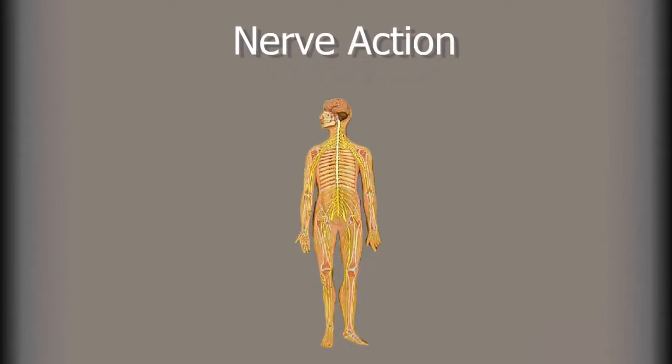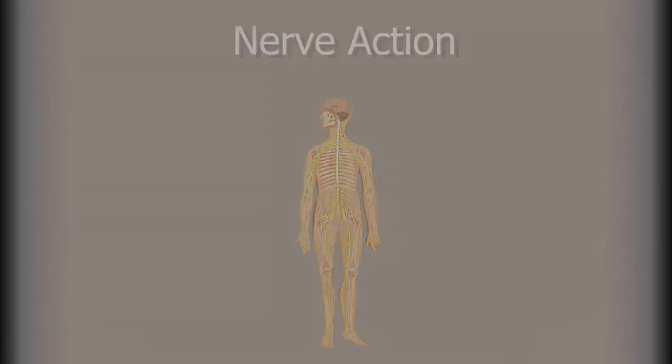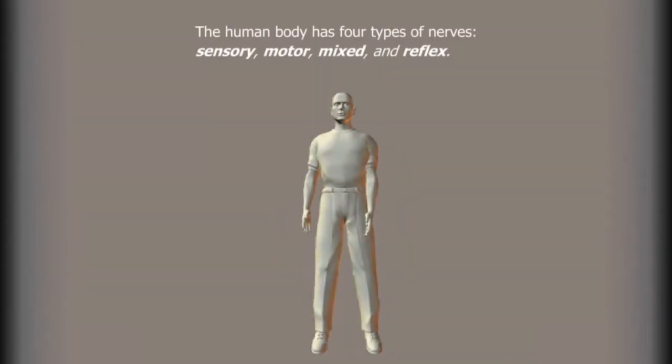Nerve Action. The human body has four types of nerves: sensory, motor, mixed, and reflex.